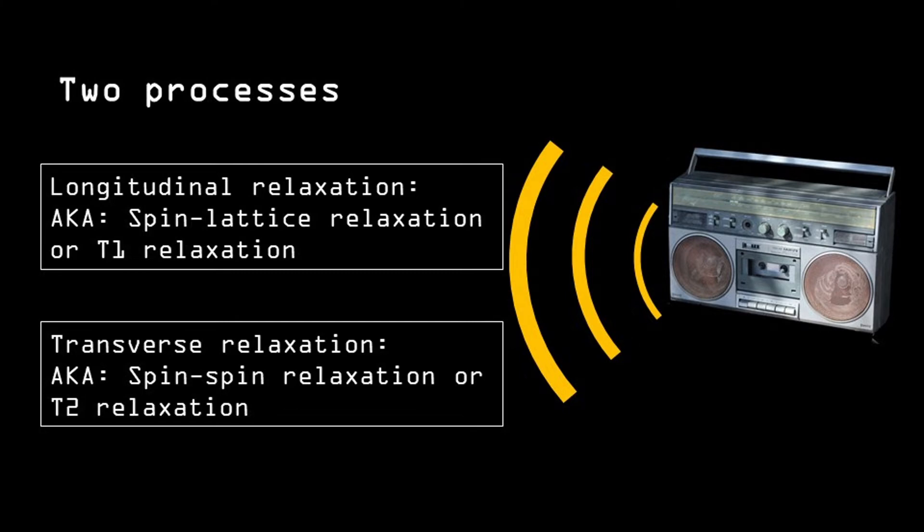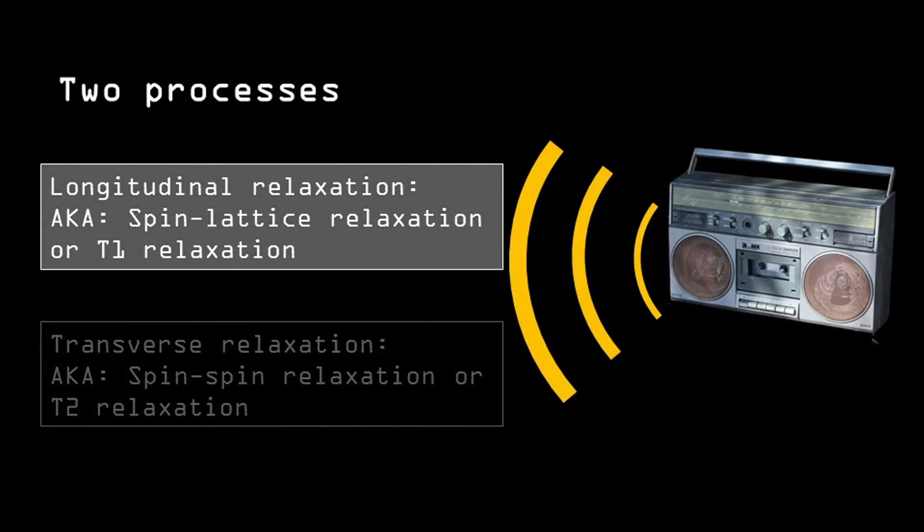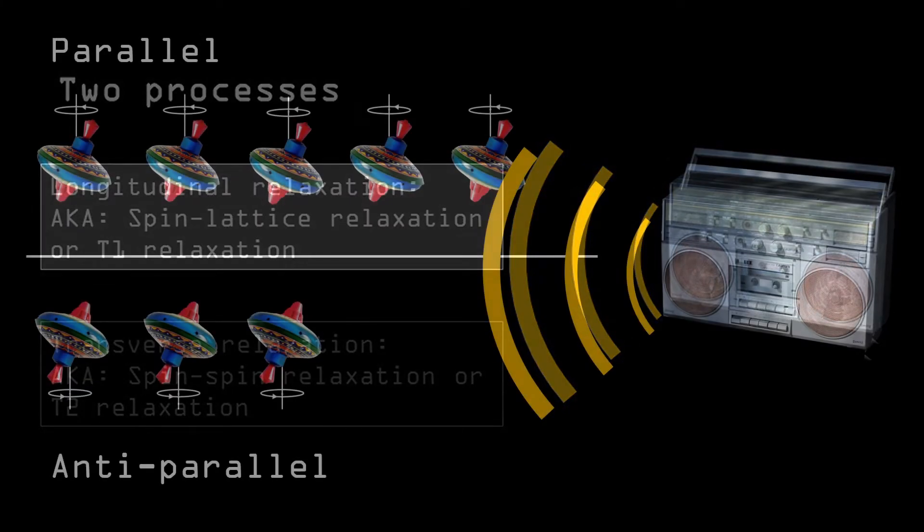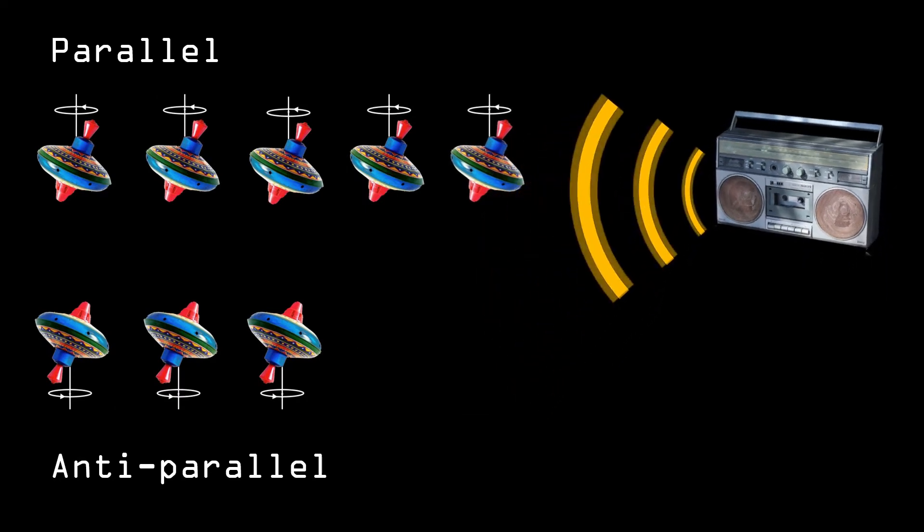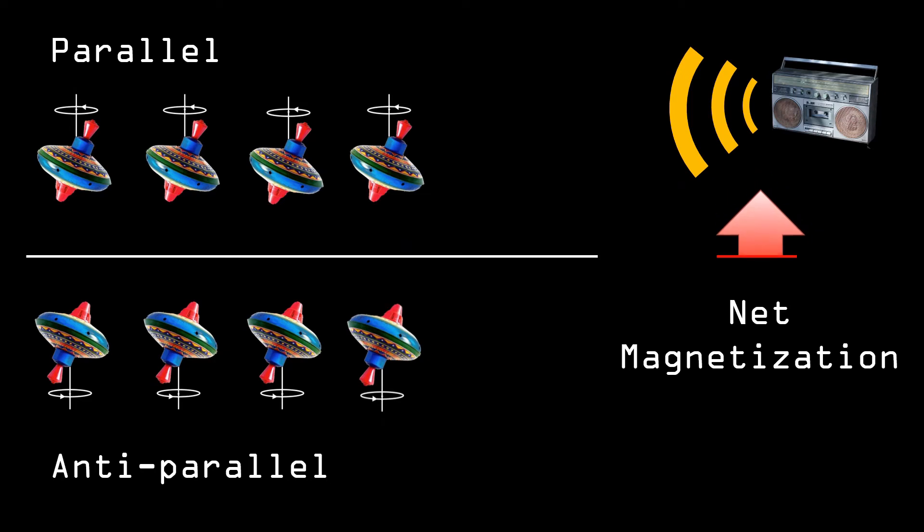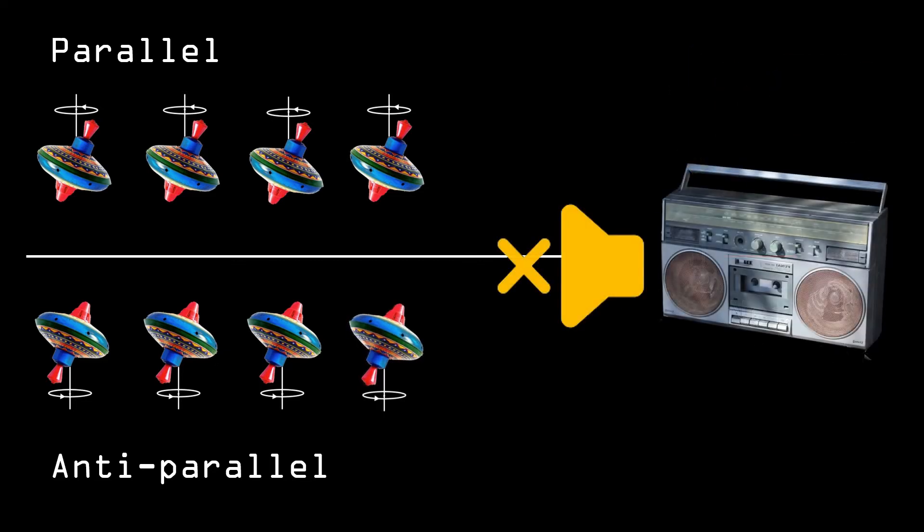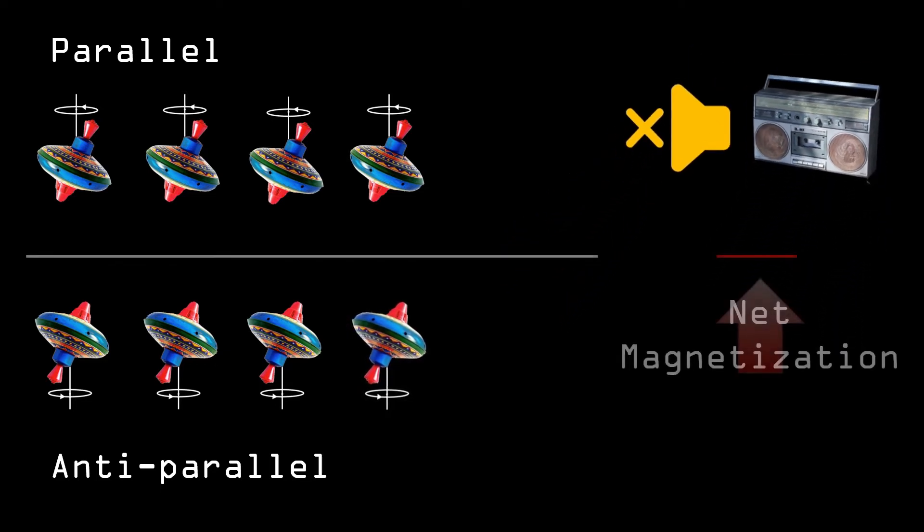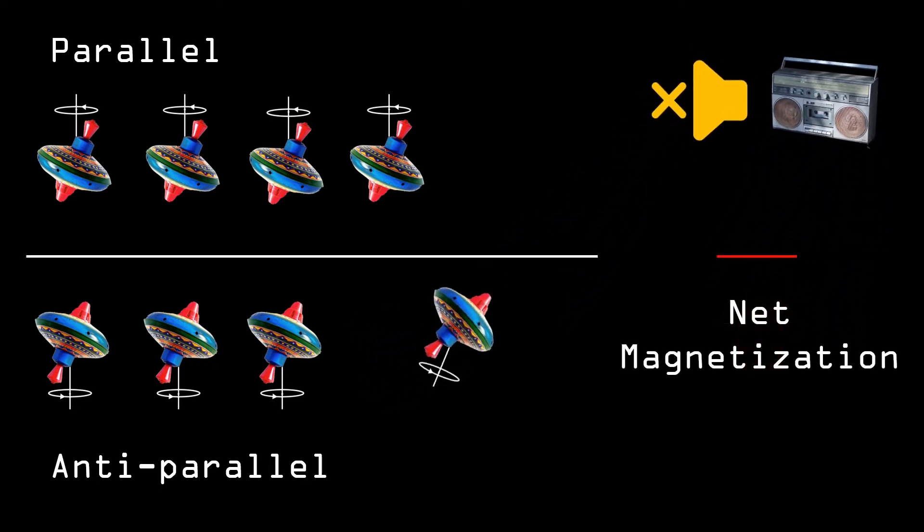When the radio frequency pulse is applied, two things happen at the same time. One thing is that the radio frequency pulse causes more protons to turn upside down in the anti-parallel direction. This causes the net magnetization in that direction to turn to zero. After the radio frequency pulse is turned off, the protons return back to their original parallel position, meaning that the net magnetization returns.